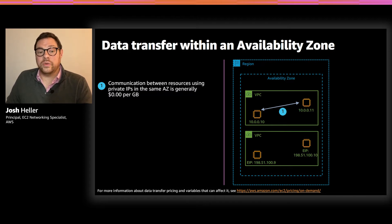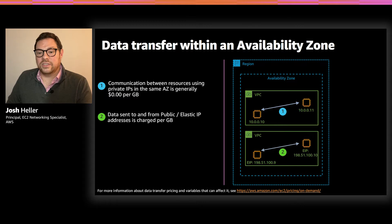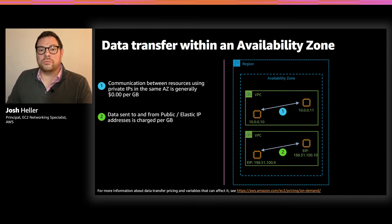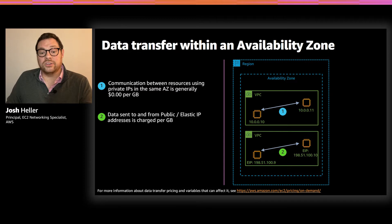So we talked about two instances in a VPC that communicate with private IP addresses. What happens if we're not using private IPs? In our second VPC, we have two instances that have elastic IP addresses attached to them. An elastic IP, or EIP, is a public IPv4 address reachable from the internet. When an instance communicates using an EIP or any public IP address, there's a cost to that — it's charged per gigabyte, even when you're communicating within a single VPC in a single AZ. So while there may be good reasons for using public IP addresses, it's best to use private IP addresses when possible.